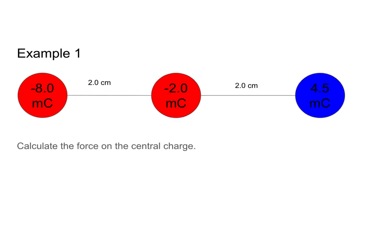Now we've talked about it theoretically, let's go ahead and look at an example. Let's calculate the force on the central charge with some numbers. The force of my eight-coulomb charge on my two-coulomb charge is going to be to the right because it will be repulsive. The force of the blue charge on the central charge is also going to be to the right because it is attractive. So when I calculate my net force, it's going to equal F1 plus F2, because both of these two forces are in the positive direction.